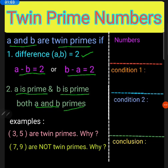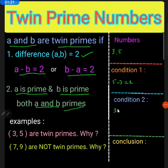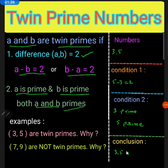Here we have an example: three and five. The first condition is five minus three equals two. The second condition is three is a prime number and five is also a prime number. So the conclusion is these two numbers, three and five, are twin primes.